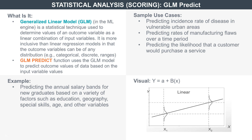In statistics, a linear model is used to predict the value of a variable based on the value of other variables on which it depends. For example, let's assume the price of a new car depends on A, the average local income, and B, the price of local housing. This is a linear relationship.